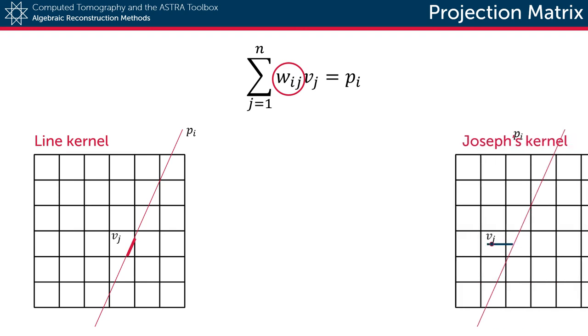A second option is Joseph's kernel. What happens here is that for each row or each column, we find the two voxels closest to the intersection of the ray and that row or column. And then the projection weights of both voxels are found by linear interpolation. This method provides the most efficient implementation, but is a bit less accurate. Although I have to say that in practice the difference is barely noticeable.